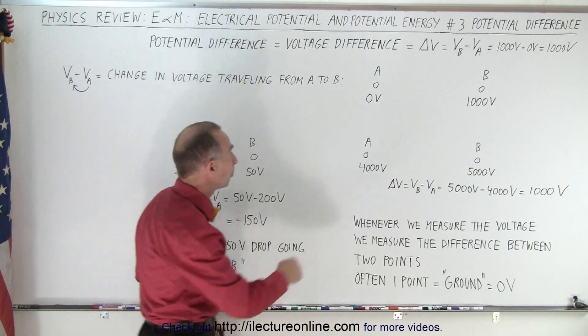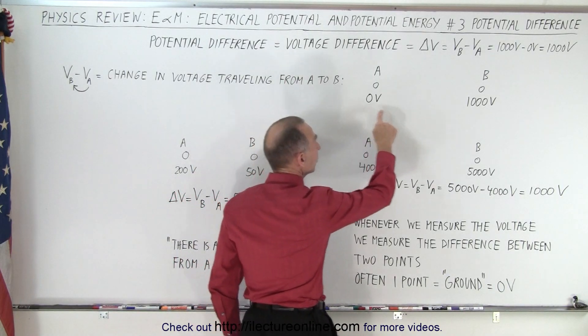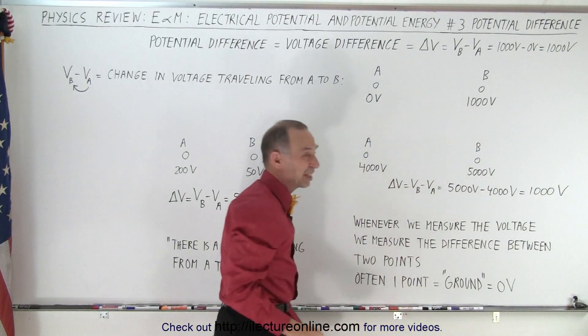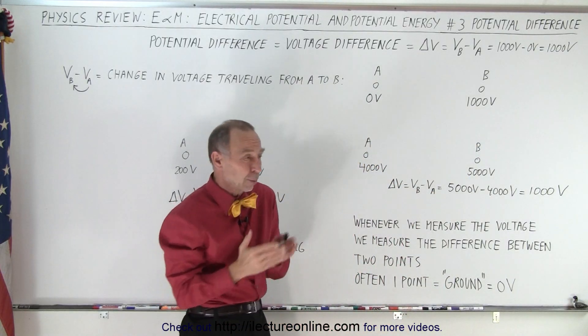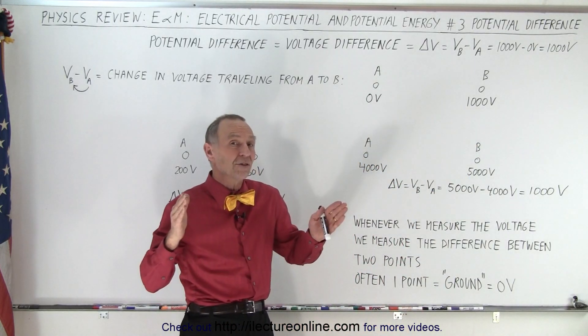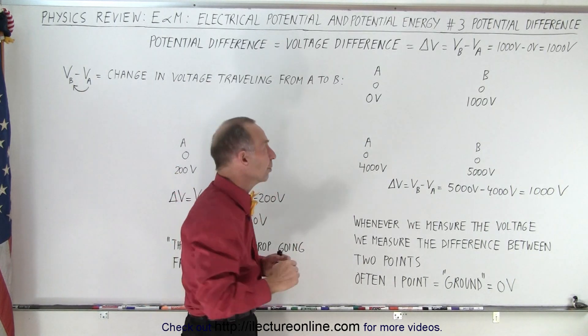For example, let's say we have one point that's at zero volts and one point that's a thousand volts. In a way that doesn't really mean a lot that one is the zero and one is the thousand. What matters is what is the difference between the two.